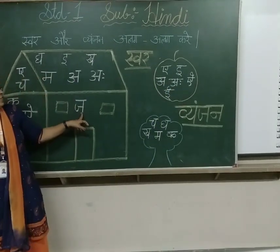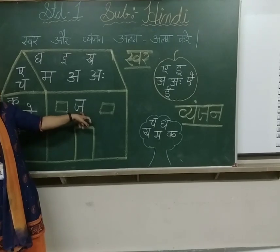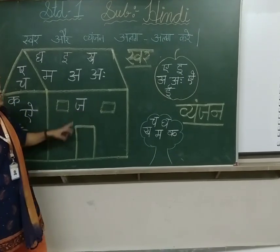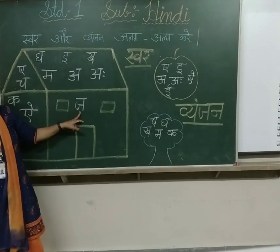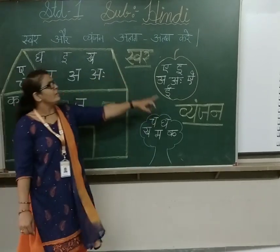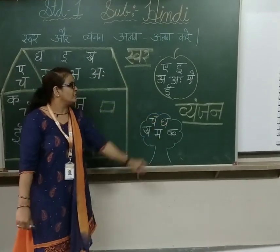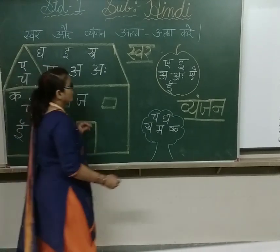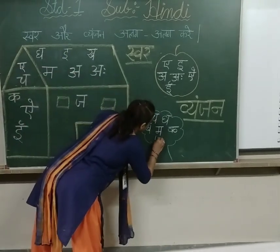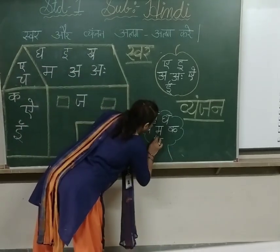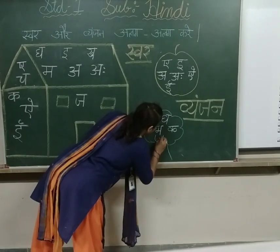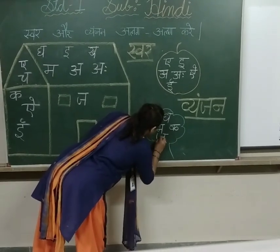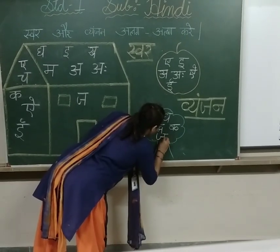Which letter is this? Which one is this? झ से झाज — झाज konsa hota hai? Swar or Vyanjan? झ से झाज Vyanjan hota hai. Vyanjan ko haam kahan likhenge? Tree ke andar. It means vriksh mein. झ से झाज.